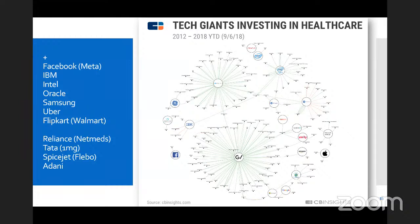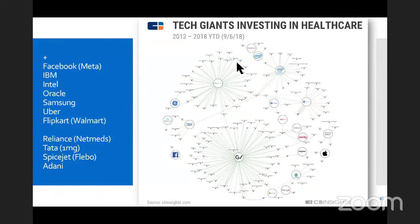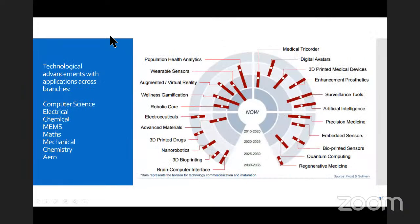Indian conglomerates are not far behind — Reliance, Tata, SpiceJet, and Adani groups are investing in healthcare. Reliance has acquired a majority stake in NetMeds, an e-pharmacy. Tata Group has acquired a majority stake in 1MG, another e-pharmacy. SpiceJet has started its own diagnostic chain called FLEEBO. And the Adani Group is investing in healthcare through its social arm, Adani Foundation.